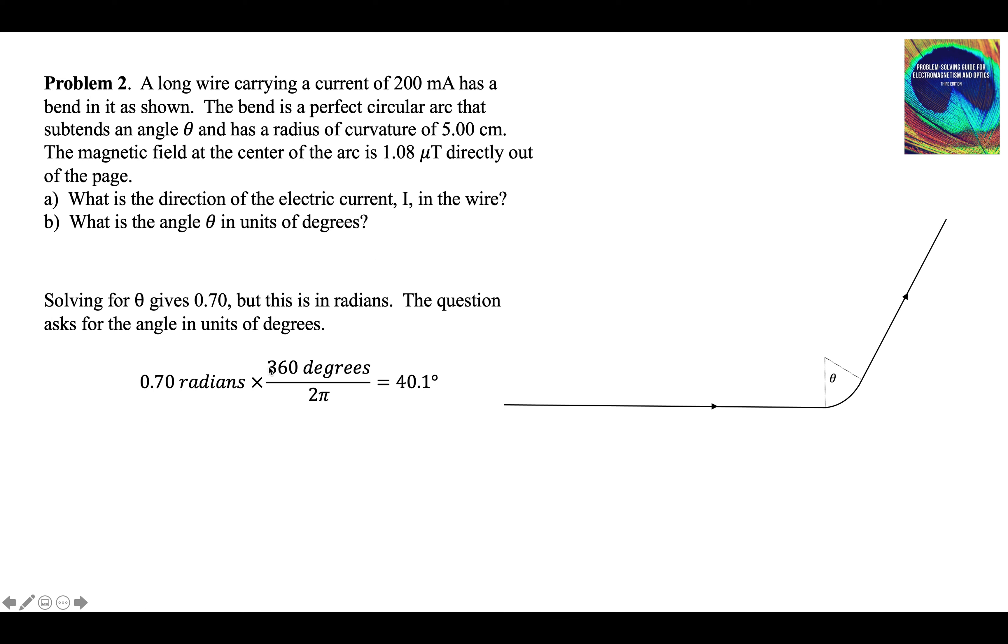0.7 radians, and 360 degrees divided by 2 pi. The conversion factor, this conversion factor is equal to one. The top is the same as the bottom, that fraction is equal to one. When you multiply something by one, the value doesn't change, and we get 40.1 degrees for the angle of the arc, and that is problem two.